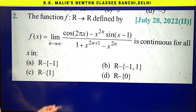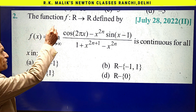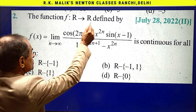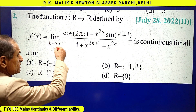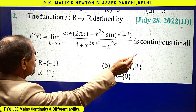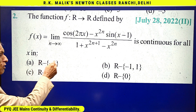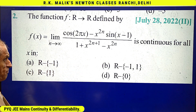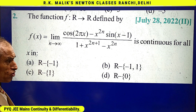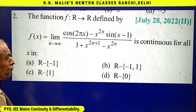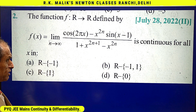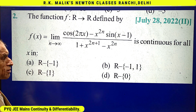In this question, the function f takes R to R defined by this equation is continuous for all x, and we have to find the correct choice. This is a very conceptual question. Before solving it, I will explain how two nested limits operate, using an example.